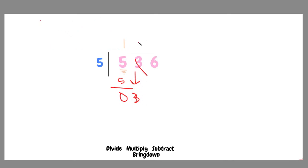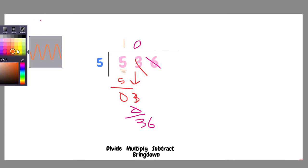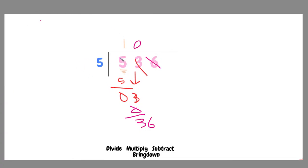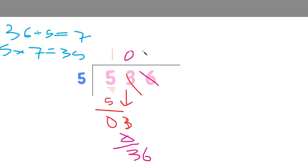So we know that that goes in zero times. Five times zero equals zero. Subtract from the three then get the six down. Now we have this 36 number and we need to find out how many times does five go into 36. So 36 divided by five equals seven. Put the seven up here.